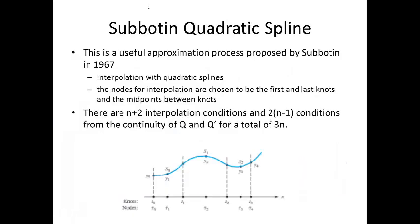Finally, we'll take a look at Subbotin quadratic splines. This is a useful approximation and was proposed by Subbotin in 1967. It's interpolation with quadratic splines. The nodes for interpolation are chosen to be the first and last knots and the midpoints between knots. Remember that the knots are defined as the point where the spline function is permitted to change in form from one polynomial to another. The nodes are the points where the values of the spline are specified. So there's a slight difference between knots and nodes. There are n+2 interpolation conditions and 2(n-1) conditions for the continuity of q and q' for a total of 3n. The author has given an outline of the theory and how to find the midpoints, the form of the segments, and how to solve the associated tridiagonal system for the z sub i. After finding all the zi, we can compute q(x) and suitable code can be written to carry out the interpolation method. The entire process is summarized quite nicely in one rather large bullet on page 261.